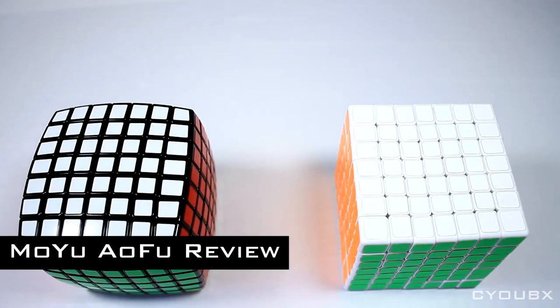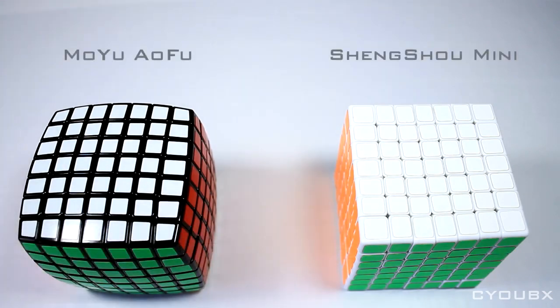This cube was sent directly from Moyu through Crazy Bad Cuber, so a huge thank you to both. The Moyu AoFu stands taller than the Mini Xingxiao 7x7, but feels similar due to the pillowed shape.